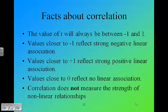Some more facts. The value of r is always between negative 1 and 1. You're never going to see r reported as 1.4. The closer it gets to negative 1, the stronger negatively associated these two items are. Values closer to positive 1 reflect a strong positive linear association. Values close to 0 reflect no linear association. Also remember that correlation does not measure the strength of nonlinear relationships. If it's not a straight line, correlation won't tell you squat. Make sure that you're only looking at linear relationships.